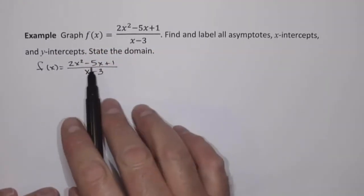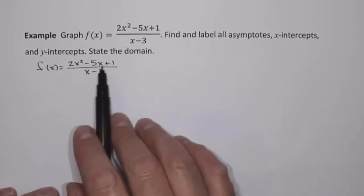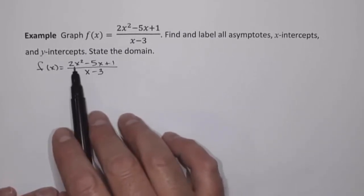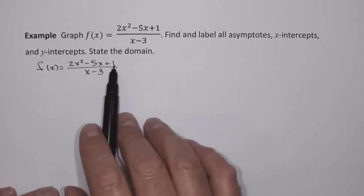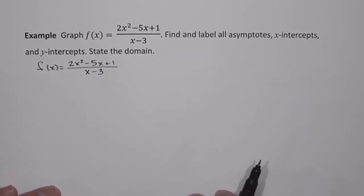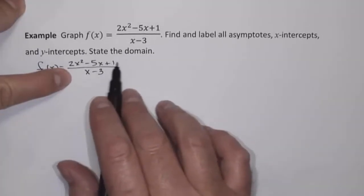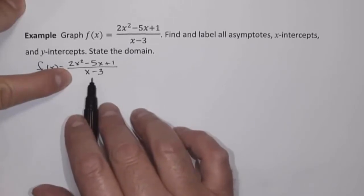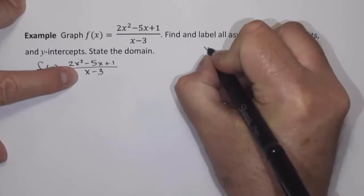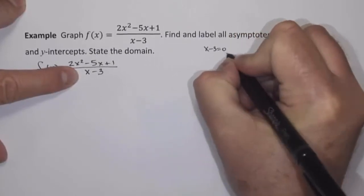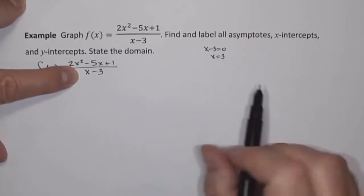We want to make sure we don't have any common factors in the numerator and denominator. In this case, we do not, because the numerator cannot factor — it's not possible to factor 2x squared minus 5x plus 1, so we don't have any common factors. Let's start by stating the domain. The domain will be all real numbers except whatever causes the denominator to equal zero. If I take x minus 3 and set that equal to zero, then x equals 3, so x cannot be 3.